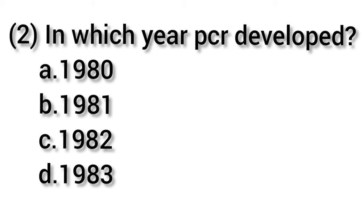The second question is: in which year was PCR developed? Option A is 1980, option B is 1981, option C is 1982, and option D is 1983. The answer is option D — PCR was developed in 1983 by Kary Mullis, and he was awarded the Nobel Prize in 1993 for his discovery.